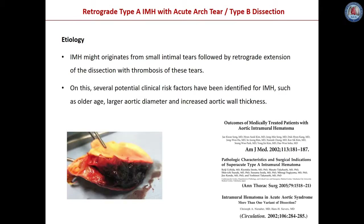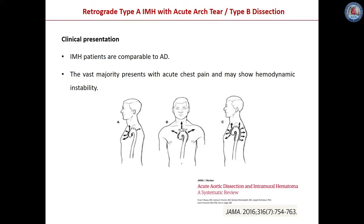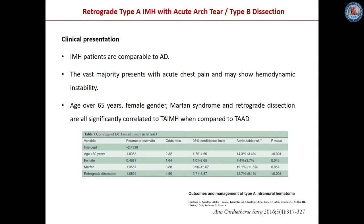Several potential clinical risk factors have been identified for intramural hematoma, such as older age, larger aortic diameter, and increased aortic wall thickness. The clinical presentation of IMH patients is quite comparable to those suffering from aortic dissection; the vast majority presents with acute chest pain and may also show hemodynamic instability. It has also been reported that patients affected by intramural hematoma Type A more frequently are older than 65 years old, more frequently are female, are affected by Marfan syndrome, and may also have a retrograde dissection when compared to those who present with classic Type A acute aortic dissection.